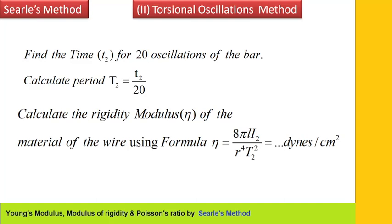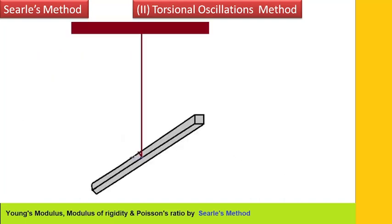Calculate the modulus of rigidity (η) of the material of the wire using the formula: η = 8π × l / (r⁴ × T2²), in dynes per centimeter square, where small l is the length of the wire. This is the method showing how torsional oscillations are performed, shown in detail in the animation.